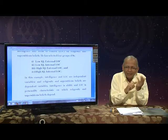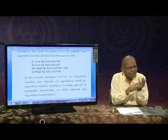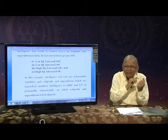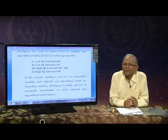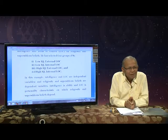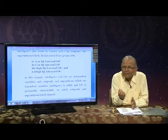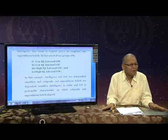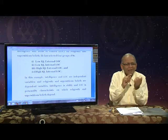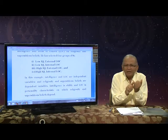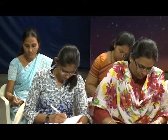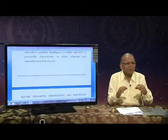Now I can put it into a two-way factorial design. I shall select subjects having high intelligence and external locus of control; high intelligence and internal locus of control; low intelligence and external locus of control; and low intelligence and internal locus of control — four groups. You will find that religiosity is more among those who have less intelligence and a predominance of external locus of control. Nobody will challenge this because independent variable is defined correctly and dependent variable is also defined correctly.